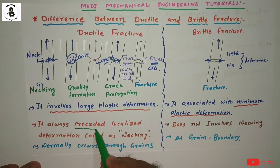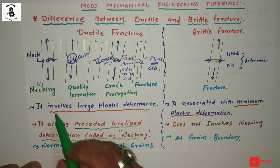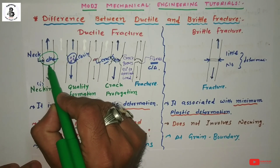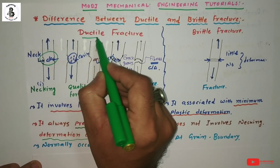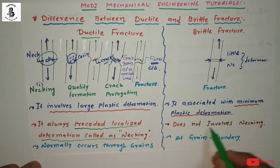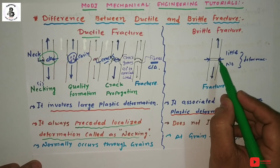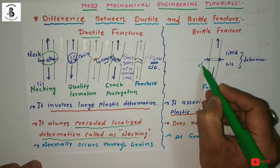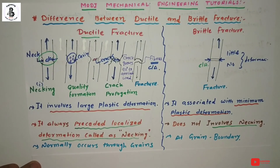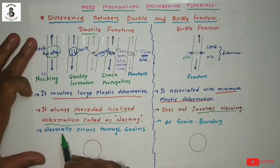In ductile fracture, failure always precedes localized deformation called necking — necking only takes place in ductile fracture. But in the case of brittle fracture, there is no necking involved — there is no reduction in the cross-sectional area of the material.